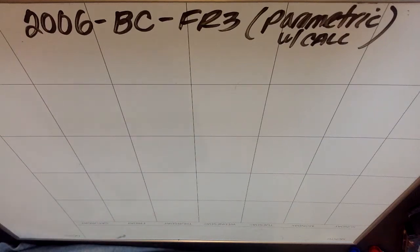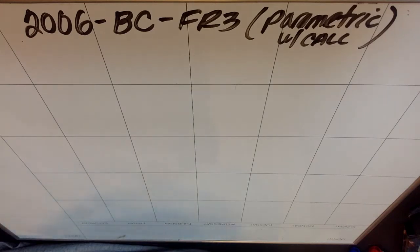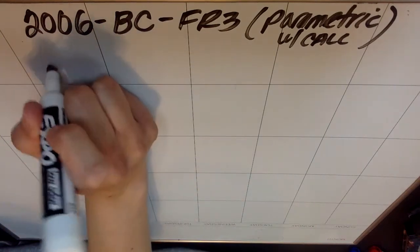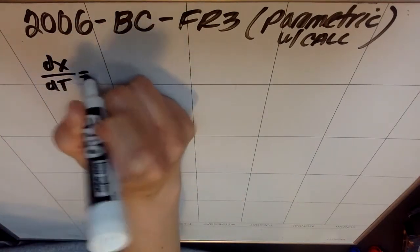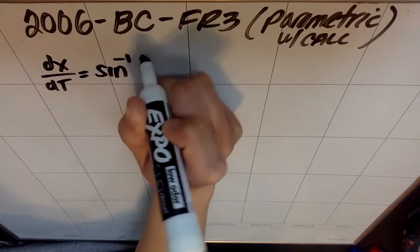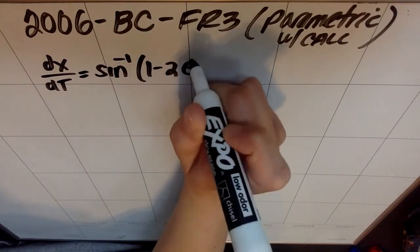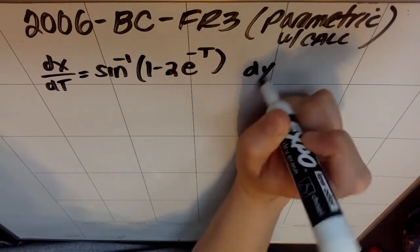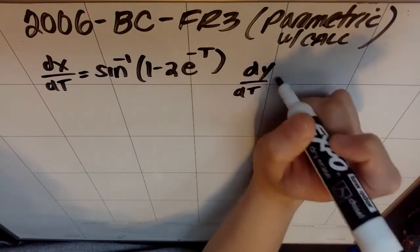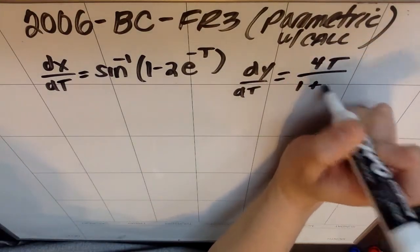All right, we're going to continue doing AP review. This is 2006 BC free response 3, which is a parametric problem with a calculator. In 2006, calculators were still permitted on question 3. An object moving along a curve in the XY plane has position x(t), y(t) at time t, where they give us dx/dt and dy/dt.